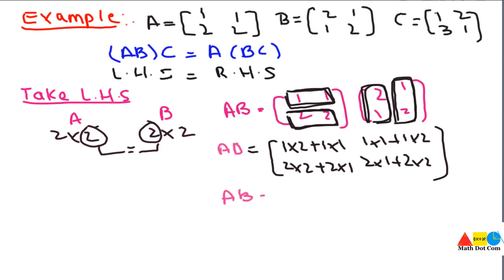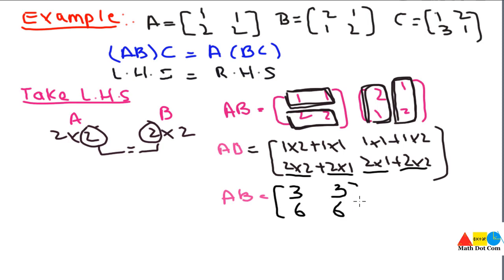Solving: AB equals — 1×2 is 2, plus 1×1 is 1, so 2+1=3. Then 1×1 is 1, plus 1×2 is 2, so 1+2=3. Again, 2×2 is 4 and 2×1 is 2, so 4+2=6. And 2×1 is 2, plus 2×2 is 4, so 2+4=6. So AB = [3,3; 6,6]. This is the multiplication of A and B.